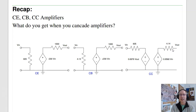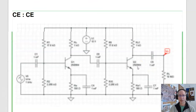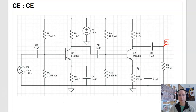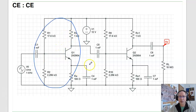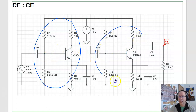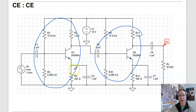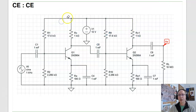What happens when you start cascading these amplifiers? Let's start out with the common emitter, common emitter. This circuit looks rather intimidating, but it's actually not that bad. Here's one common emitter amplifier isolated from the rest of the world by capacitors, and here's another common emitter amplifier isolated by capacitors. The input of the first is at the base, emitter tied to ground, output at the collector. Second stage: input at the base, emitter tied to ground, output at the collector. So I've got two common emitter amplifiers cascaded. This is where two-port models really shine.